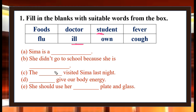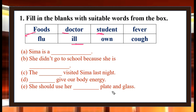Number 4: She visited Shima last night. Number 5: Food gives our body energy. Number 6: Food gives our body energy. Number 7: She should use her own plate and glass.